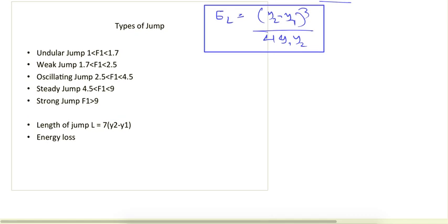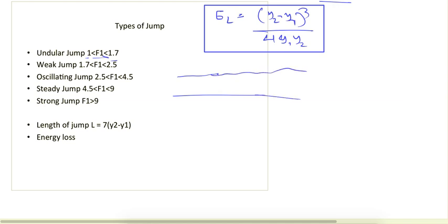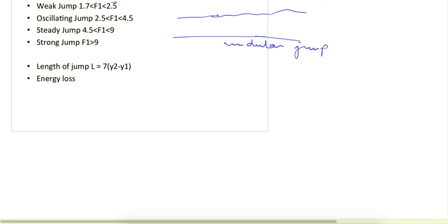There are different types of hydraulic jumps depending on the incoming Froude number F1. If F1 is between 1 and 1.7, it is an undular jump — the depth variation is not very pronounced and the jump is not very clearly defined, with undulating water surface. If F1 is between 1.7 and 2.5, it is a weak jump — as Froude number increases, the depth difference y2 − y1 increases, and so does the energy loss.